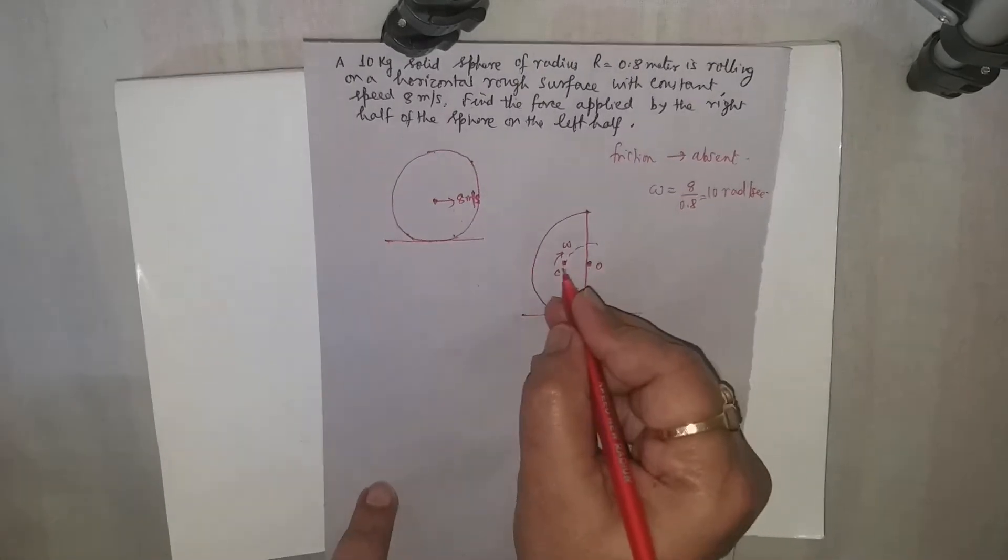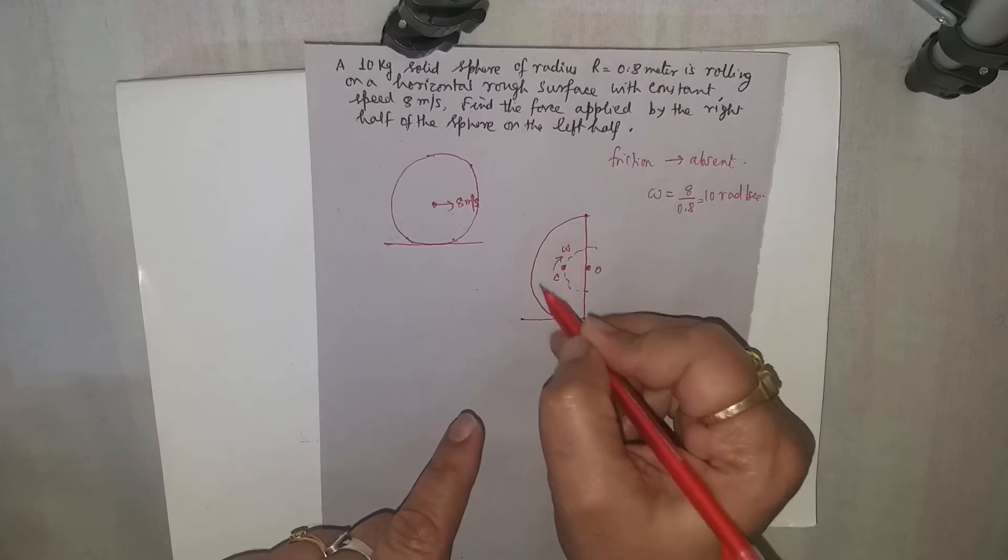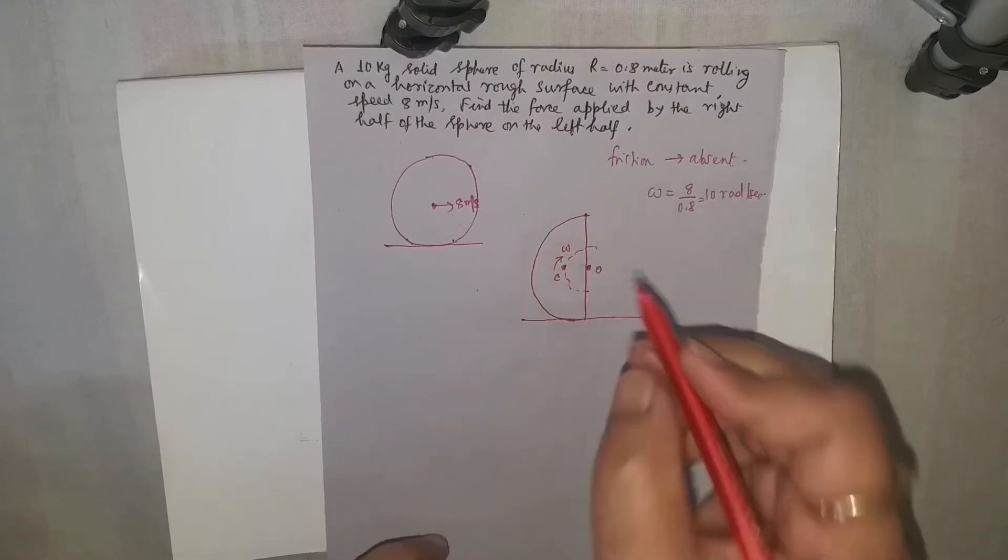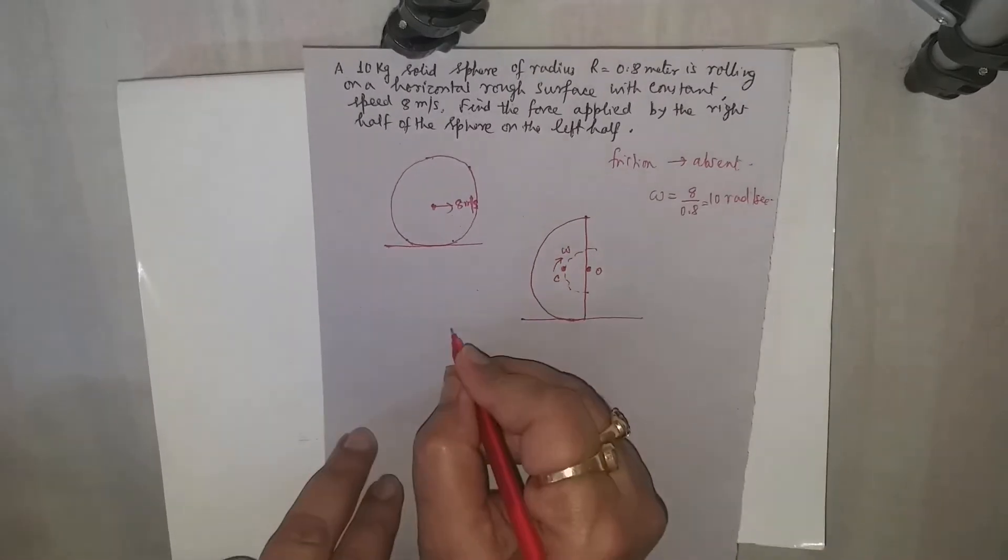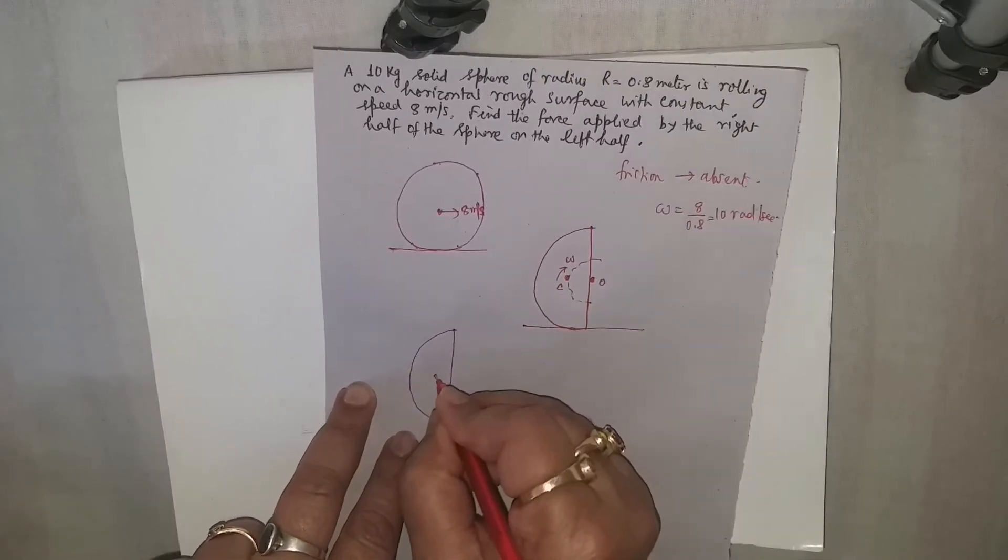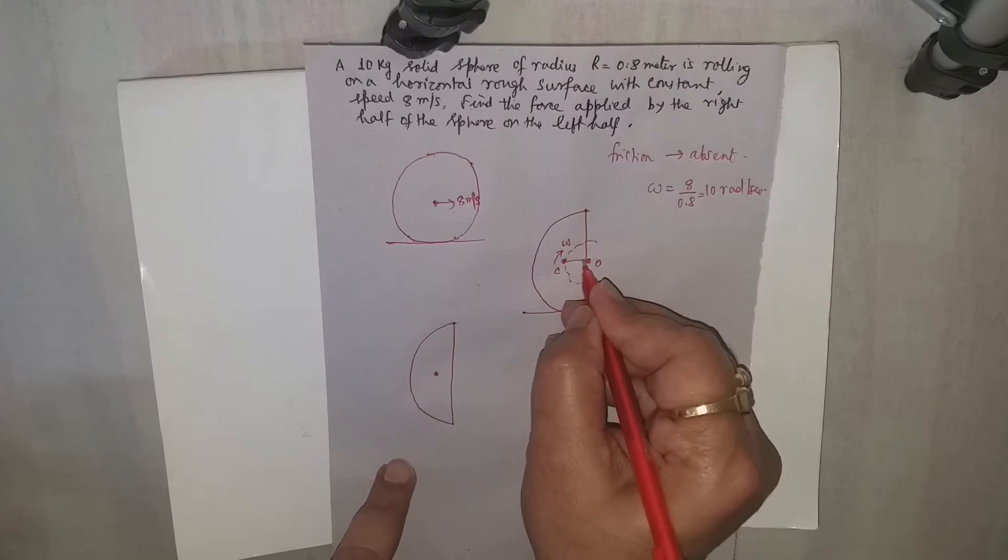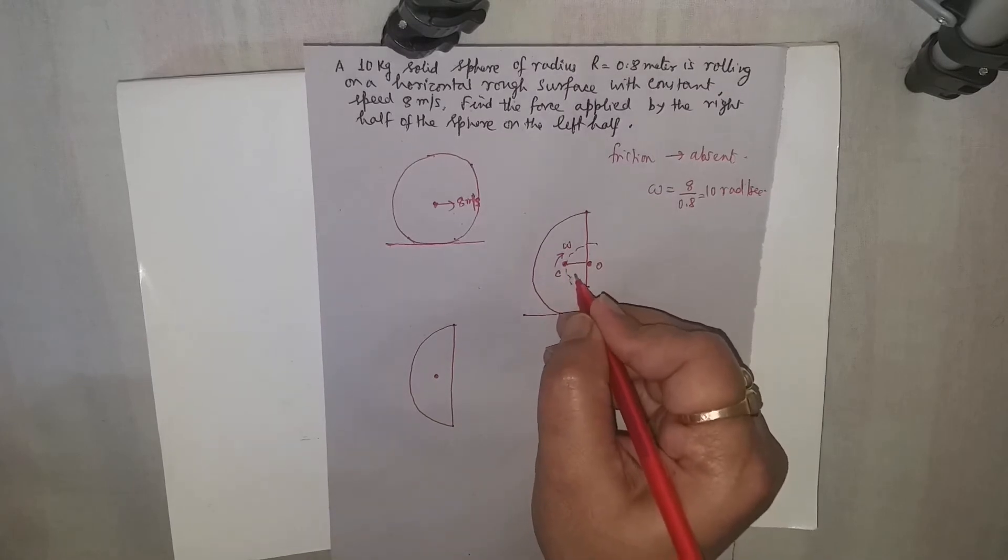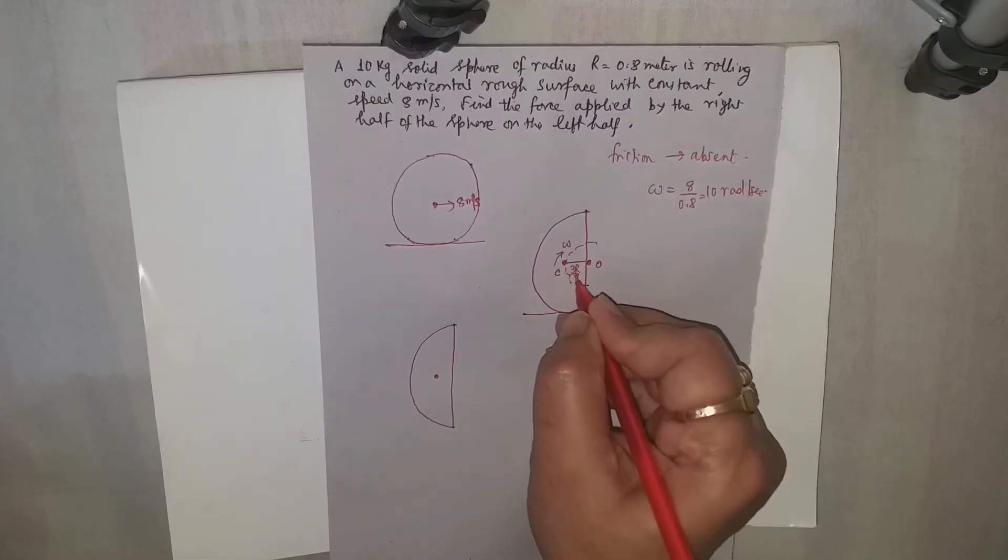Now let's check that whatever is true for this solid sphere will be represented by its center of mass. So for this, if this is the center of mass, the center of mass is at a distance of 3R by 8 from its own center.